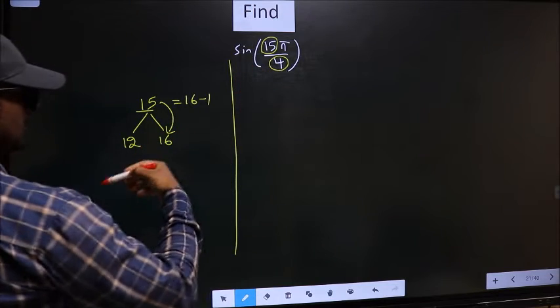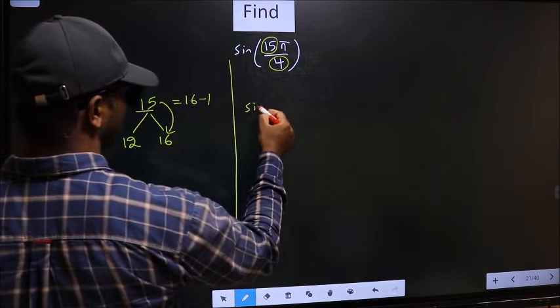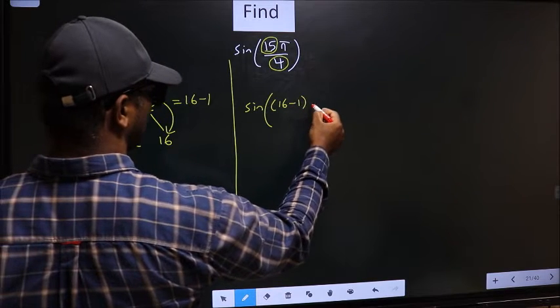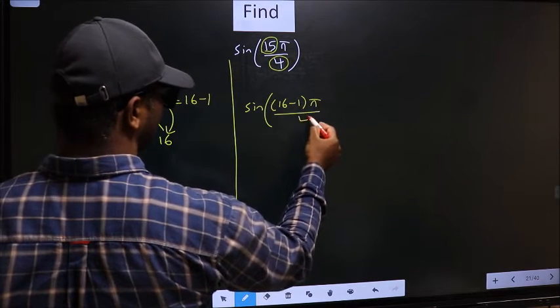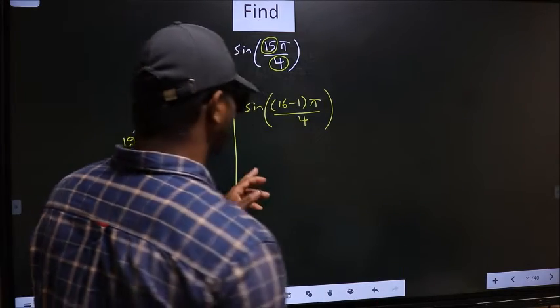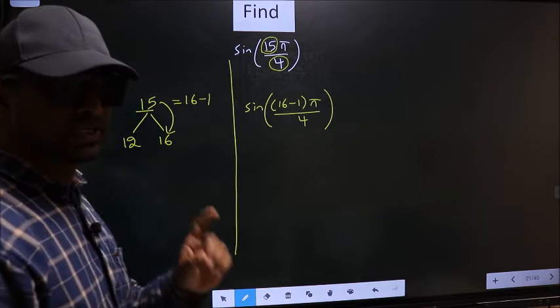So this will change to sine. In place of 15, now you write 16 minus 1, π by 4. This is your step 1.